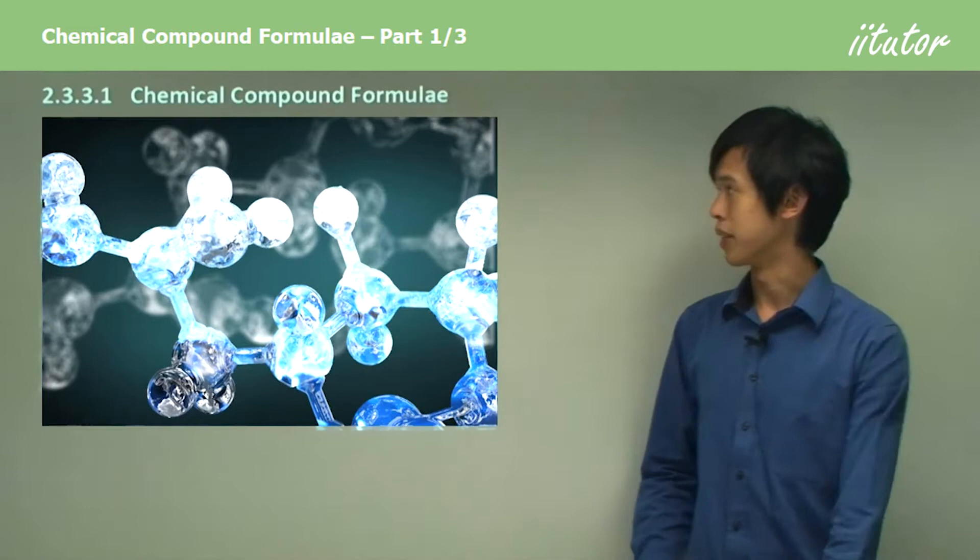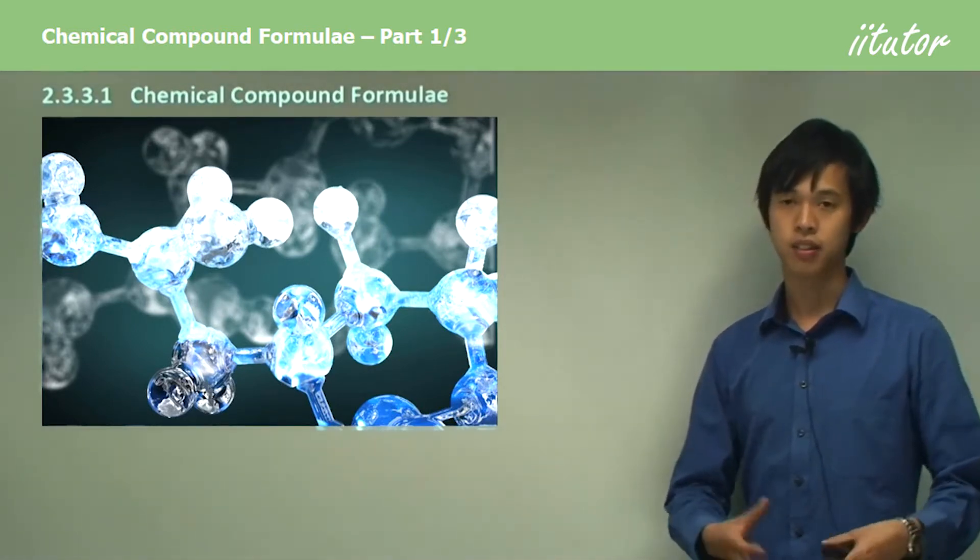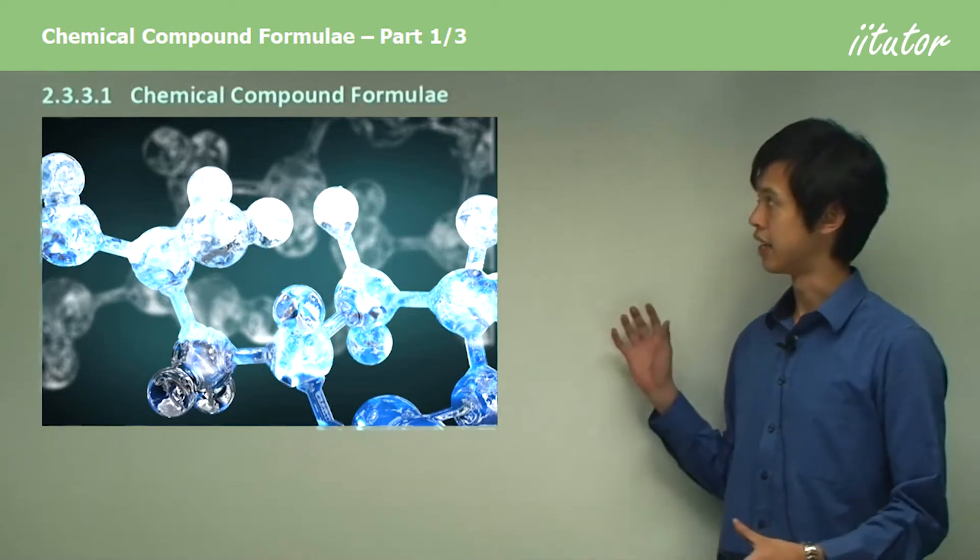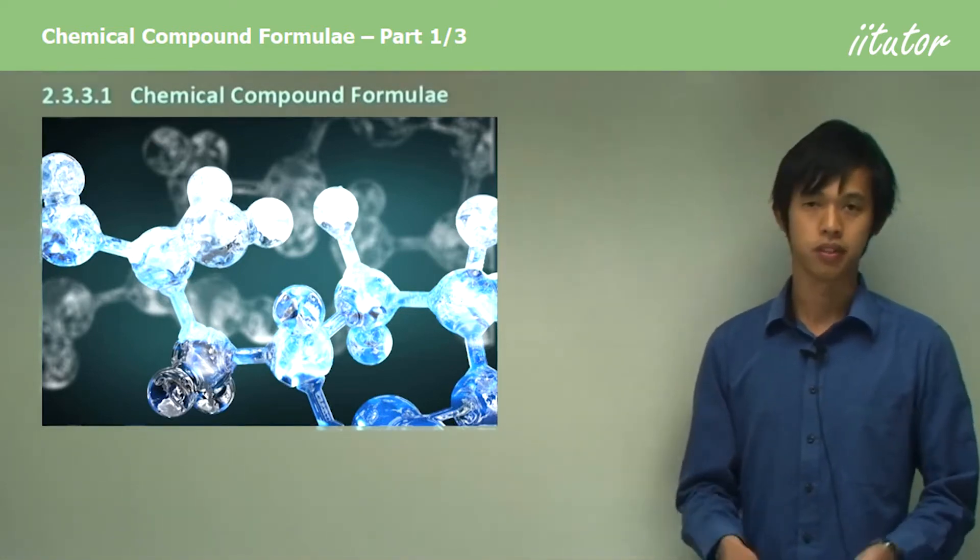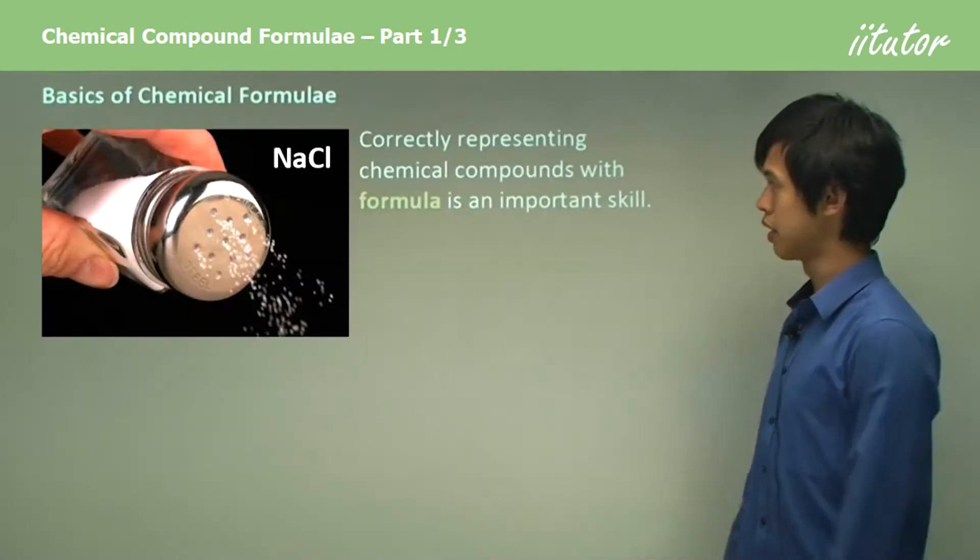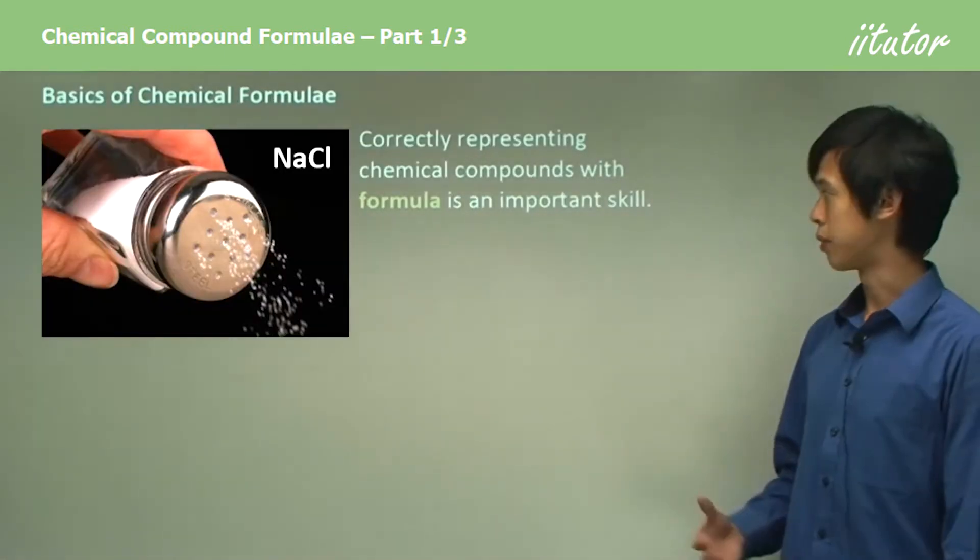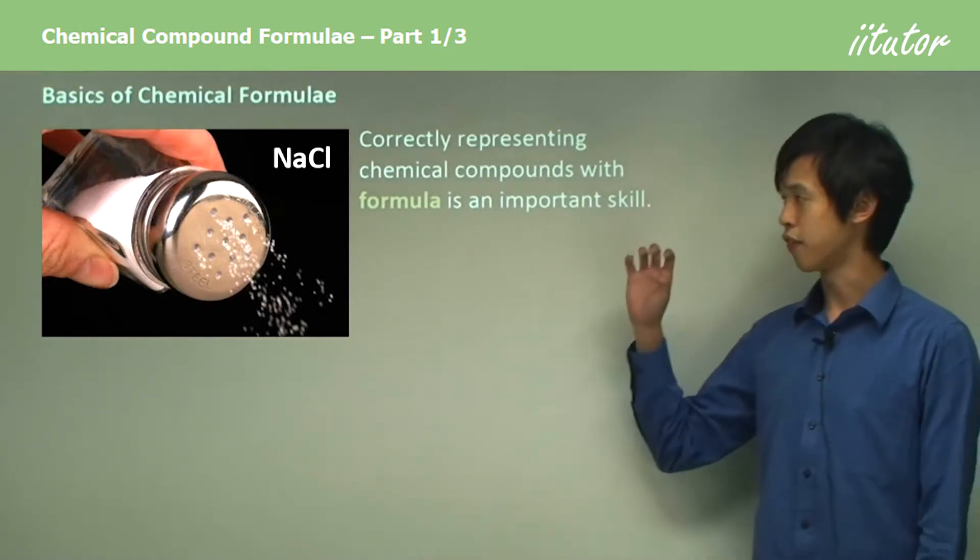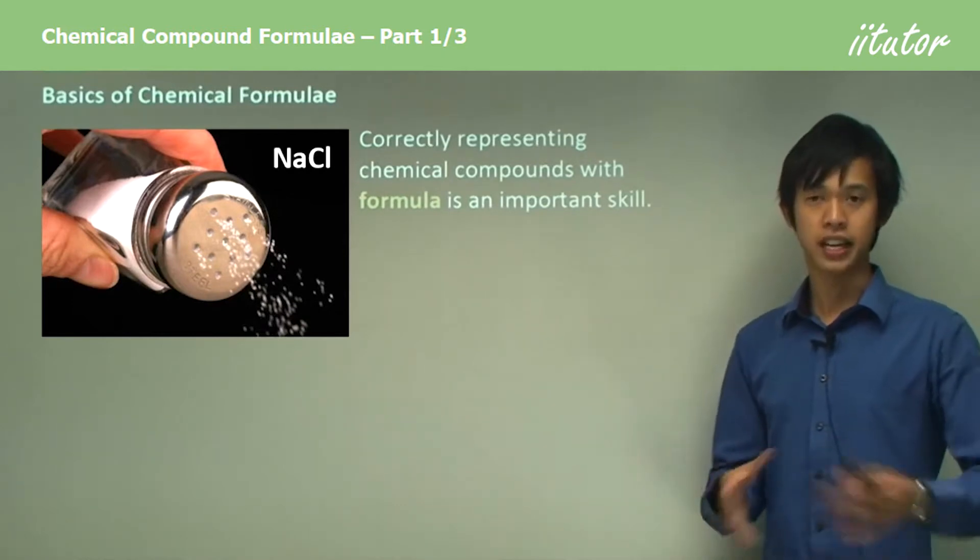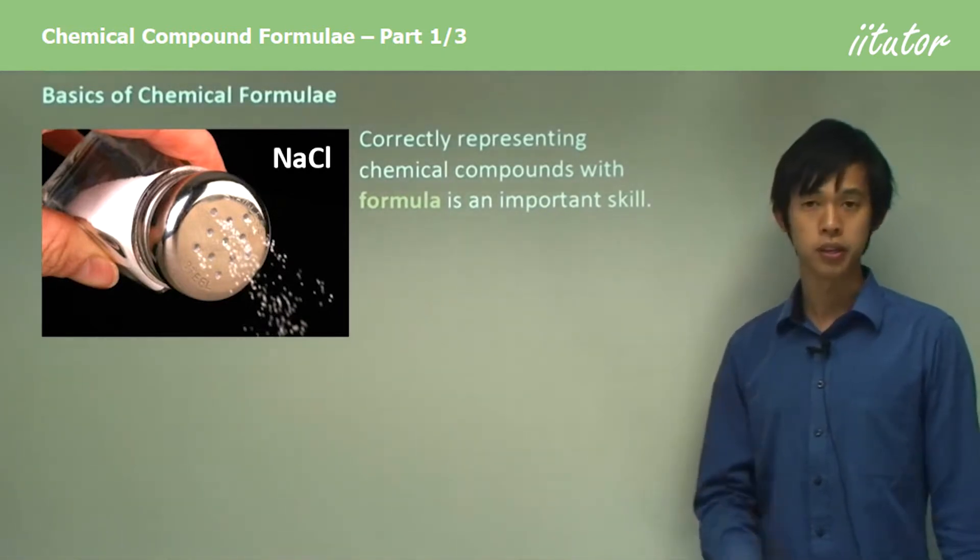So chemical compound formulae. We're going to look at how we actually write chemical formulae and how we represent chemicals using their chemical symbols and other numbers. The basics of chemical formulae - correctly representing these chemical compounds with a formula is an important skill. Using a formula to represent a chemical is a skill that all chemists need to know, otherwise you won't be able to communicate with other chemists.